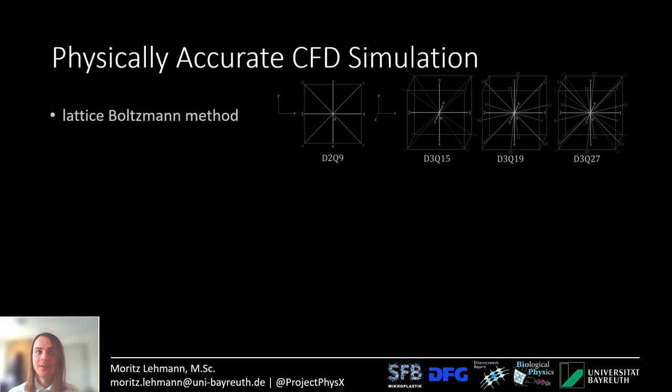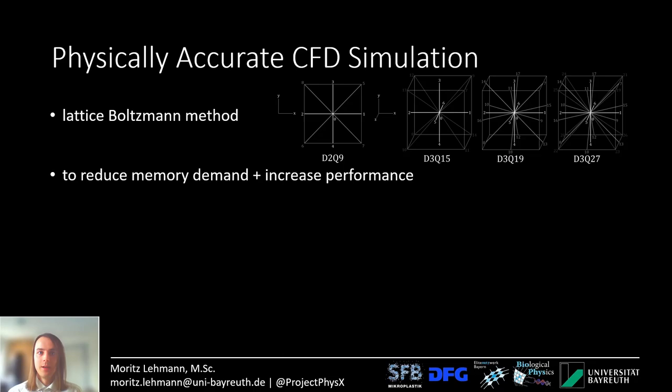Now let's dive into the CFD simulation. How do I do a physically accurate simulation? I use the Lattice Boltzmann method. Here are some of the velocity sets visualized. In this talk I will only use the D3Q19 velocity set, as this is the most common one, but I have implemented the other ones in a modular fashion as well.